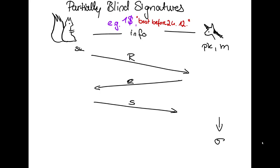In this work we consider a partially blind signature scheme, which is kind of like a blind signature scheme, just that the signer and the user share a tag info.